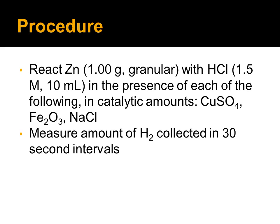For our procedure, we reacted one gram of zinc with 1.5 molar hydrochloric acid with our three catalysts, which were copper 2 sulfate, ferric oxide, and salt, or NaCl. In this experiment, we determined the rate of the reaction with our various catalysts by measuring the dihydrogen collected every 30 seconds.